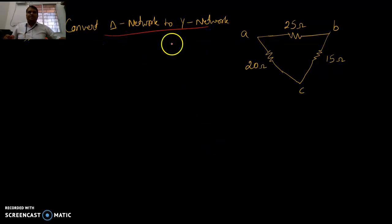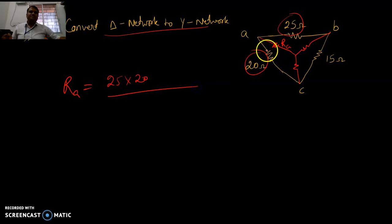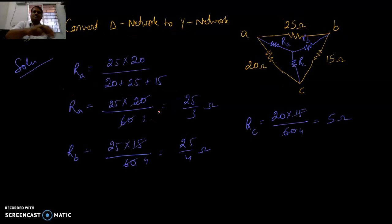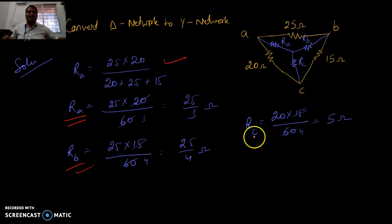Now some problems involve star-to-delta or delta-to-star conversion. A delta network A-B-C is given and we need to convert it into a star. RA equals the product of the opposite resistor divided by the sum of all: 25 times 20 divided by (25 plus 20 plus 15). Similarly, RB equals 25 times 15 divided by the sum, and RC is found the same way.